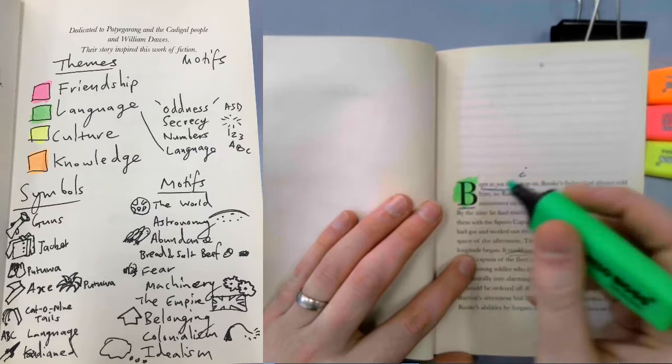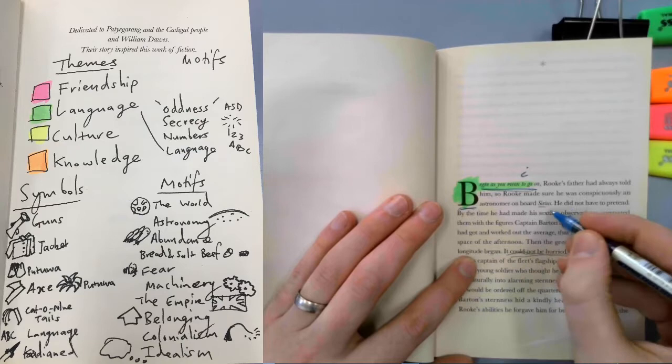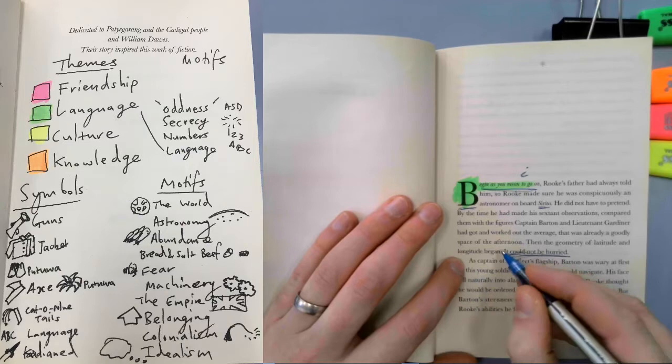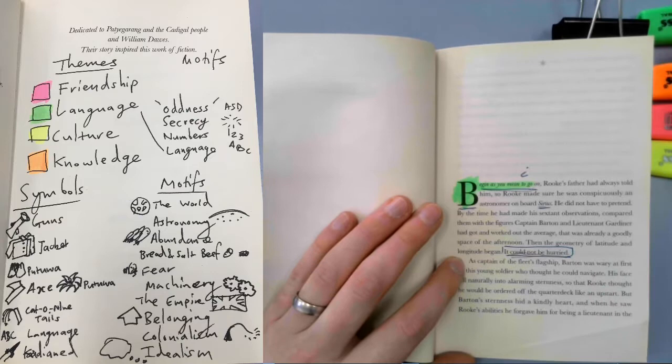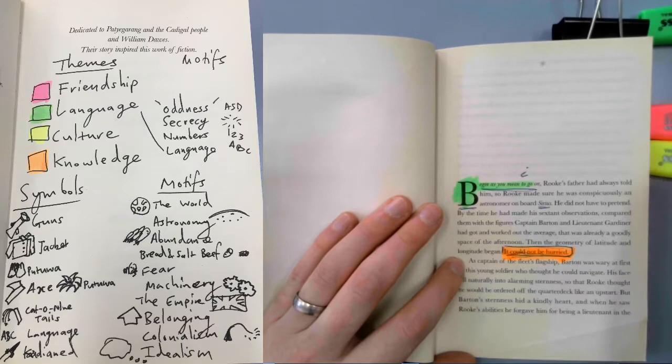If it were perhaps a more typical character, we would annotate that for friendship or love or connection, but that's not really something that's super important to him. It could not be hurried. So this, to me, is really important characterization of his approach to the world and his lack of flexibility around things.